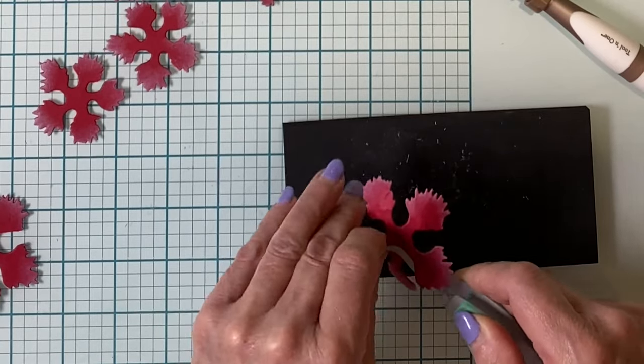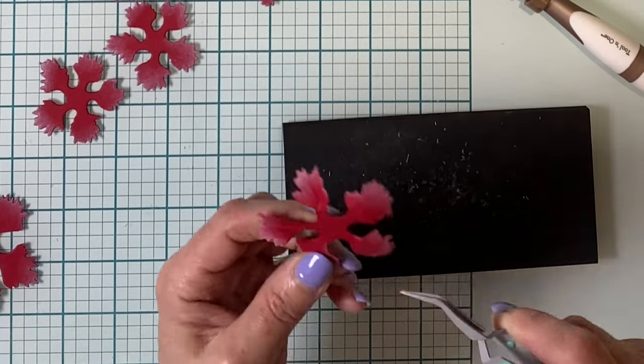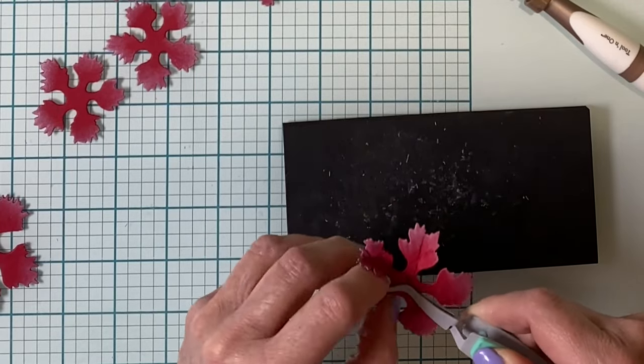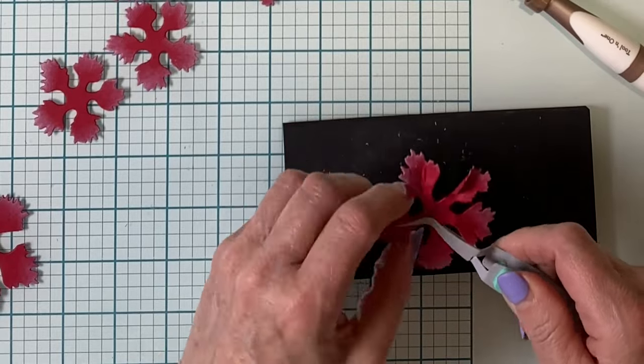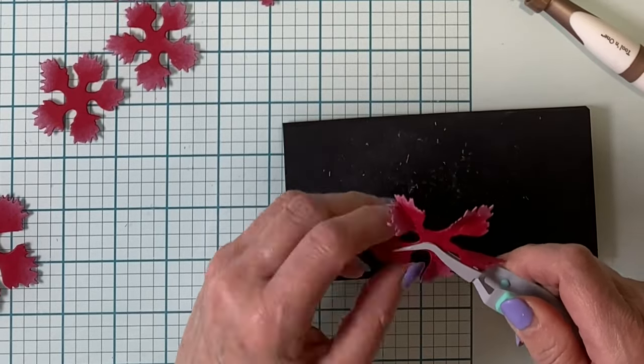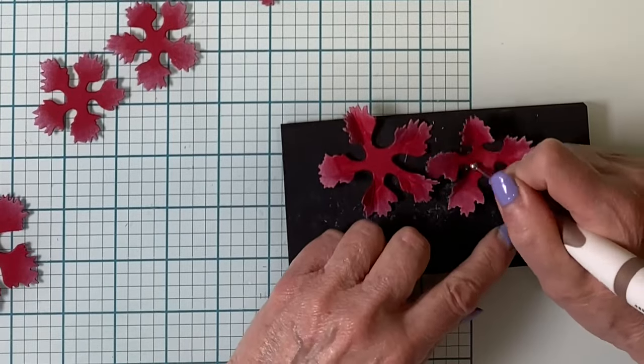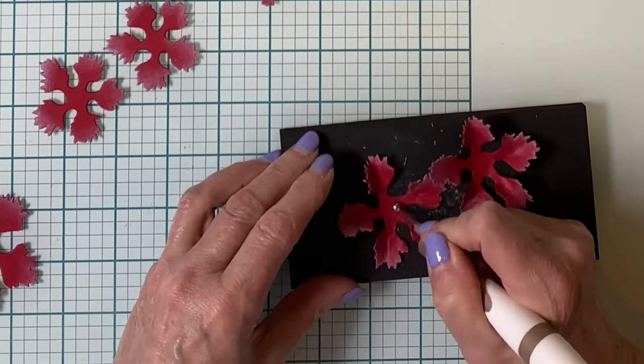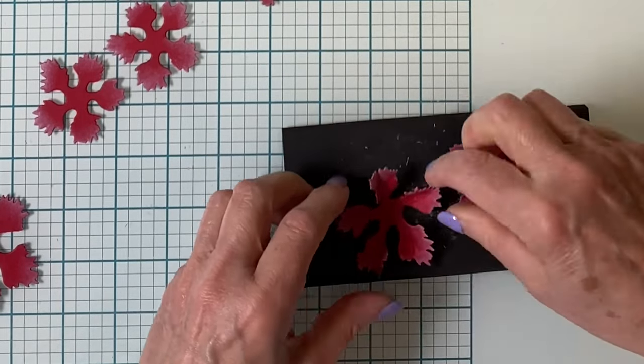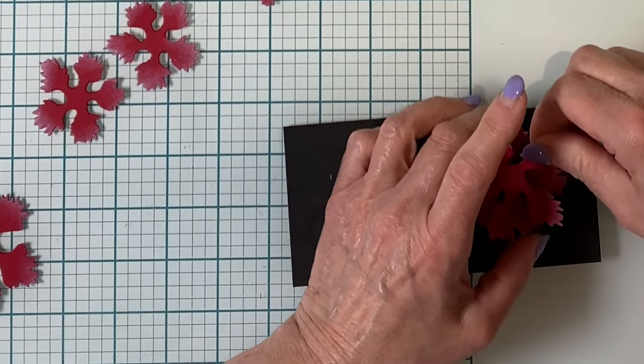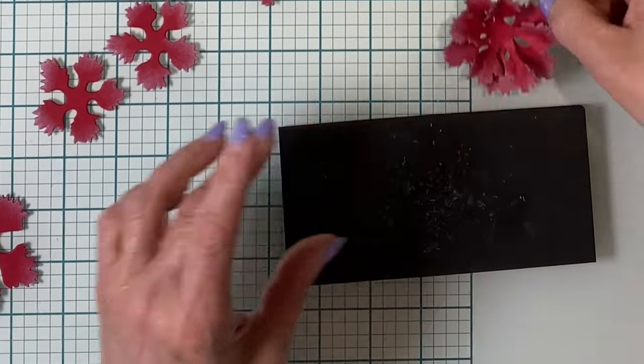And then I'll just go ahead with my reverse tweezers again, catching the base of each of the petals and squeezing it upwards just like the previous layer. And I'm going to build this carnation as I go. So I'll bring back the base layer and using the ball tool I'll make some circular motions in the center of each of these layers to cup them. Place a fairly good amount of adhesive in the center of the base layer and then offsetting the petals, insert the other one.